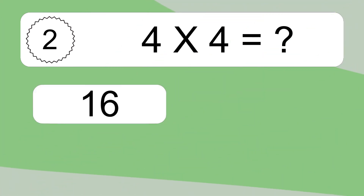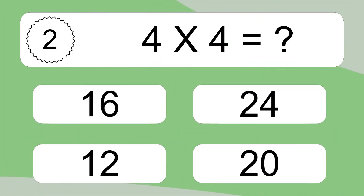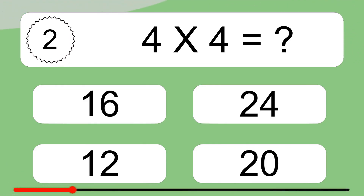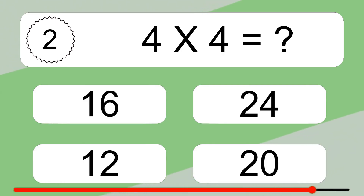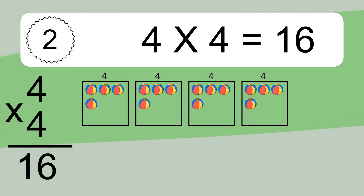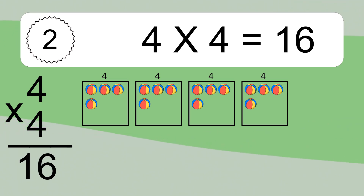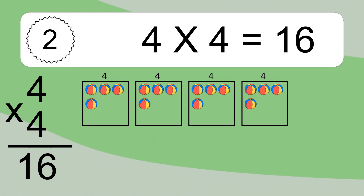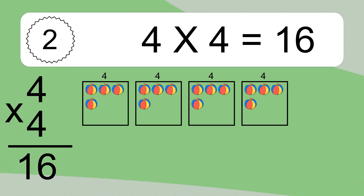4 times 4 equals what? 4 times 4 equals 16. We have 4 boxes, and each box has 4 colorful balls inside. If you count all the balls in all the boxes together, you will have 4 times 4 balls. This equals 16 balls.